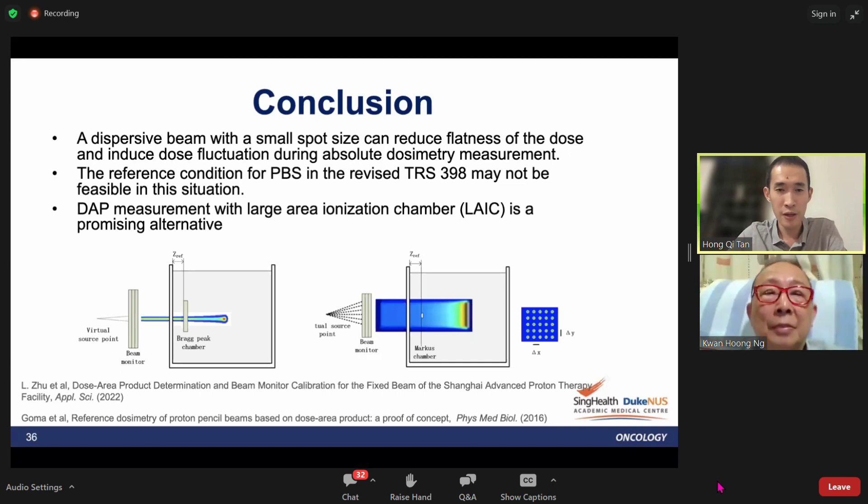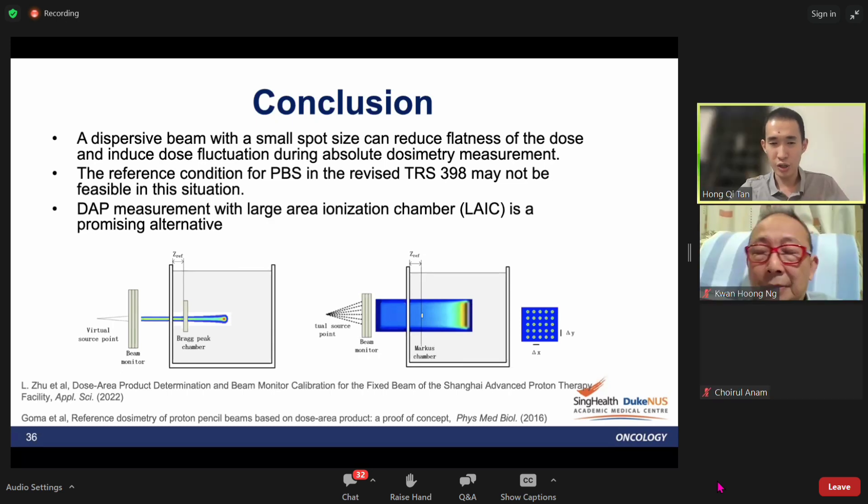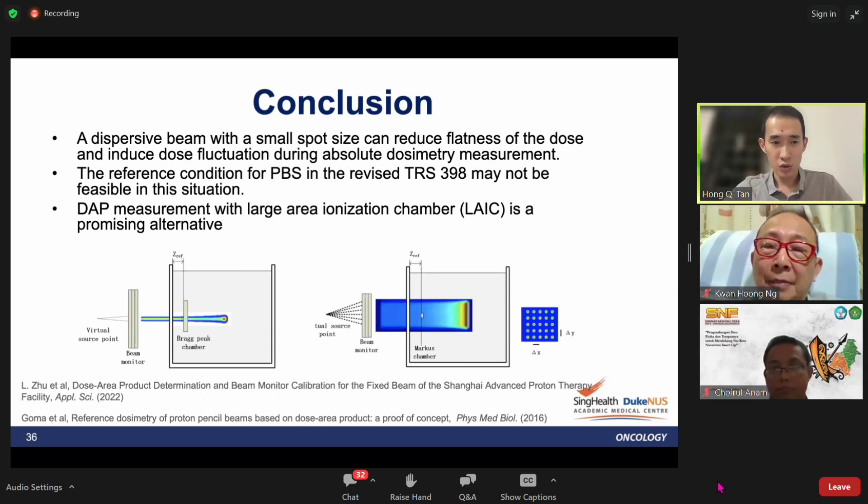The reference condition for PBS in revised TRS-398 may not be feasible in this situation because even with this rectangular spot grid, with these fluctuations you cannot do a very reliable dosimetry. But again, there are still other promising ways forward.